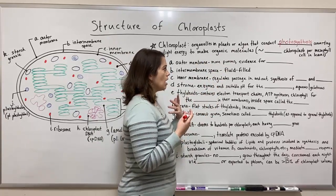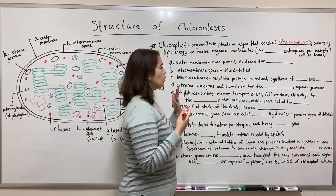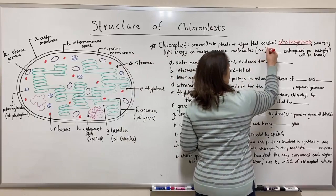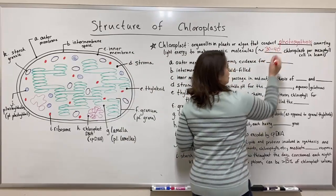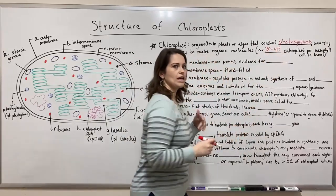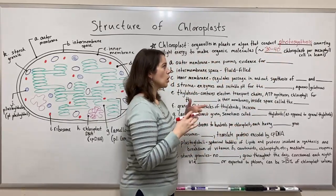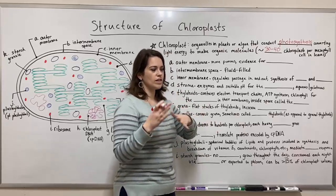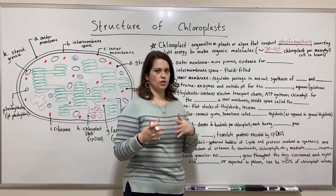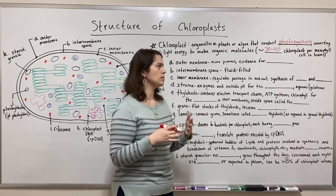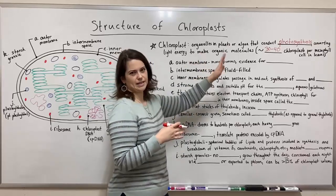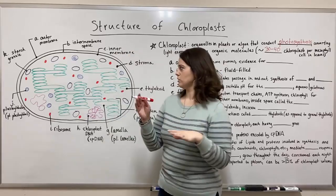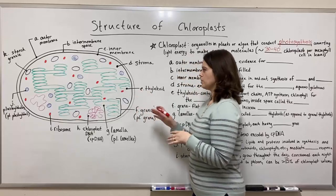There are approximately somewhere on the order of 30 to 40 chloroplasts per mesophyll cell in leaves. Obviously there's going to be variation between different kinds of species and between plants and algae. So now let's take a look at the structure of these chloroplasts.